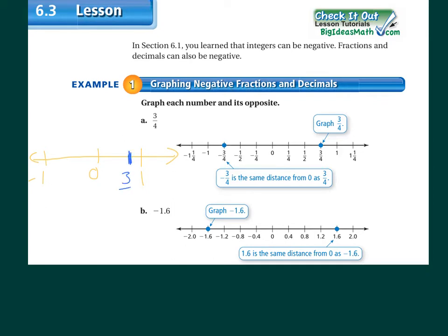Positive three-fourths would be just short of one, so it goes about here. Then on the other side, negative three-fourths is three-quarters of the way to negative one. This distance should be the same every time when we graph opposites. It's a rough picture, but don't mistakenly put negative three-fourths too close to zero — it should be closer to negative one.